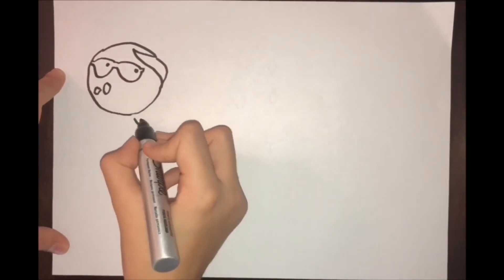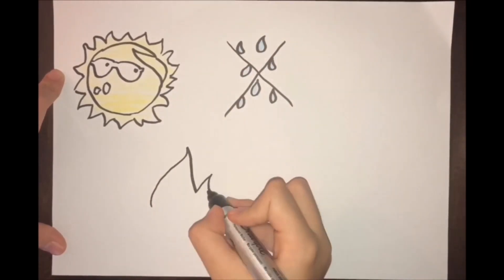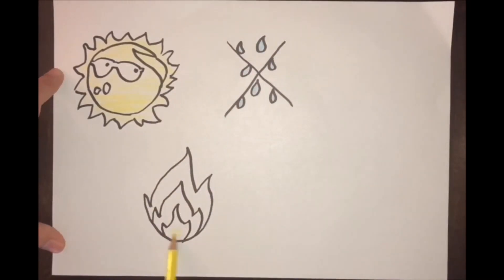The biome has hot and dry summers, mild and moist winters, but is not rainy. Temperatures range from minus 1 degree to 40 degrees Celsius. It has 10 to 17 inches of rain per year, mostly in the winter. Many fires start because of the heat and dryness.